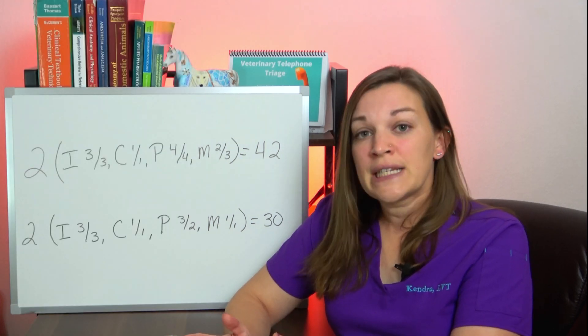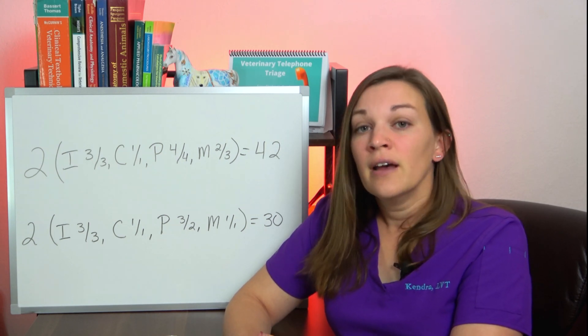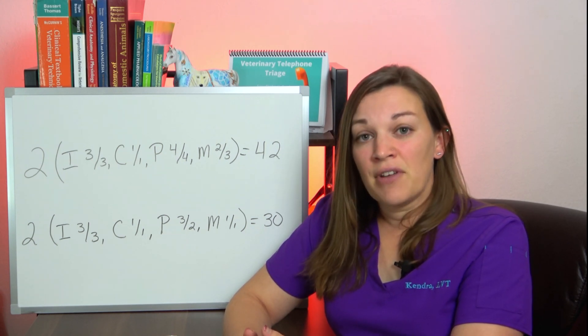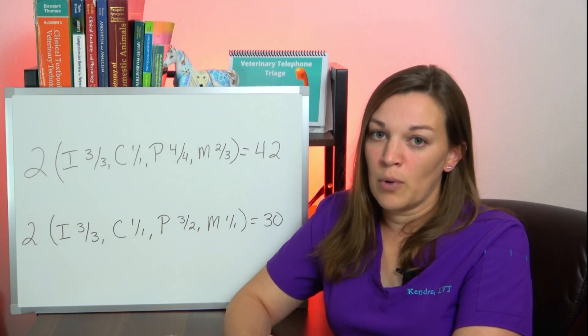So we have one through three set aside for our incisors, four is our canine, five, six, seven, and eight for our premolars, and then nine, ten, and eleven for our molars.